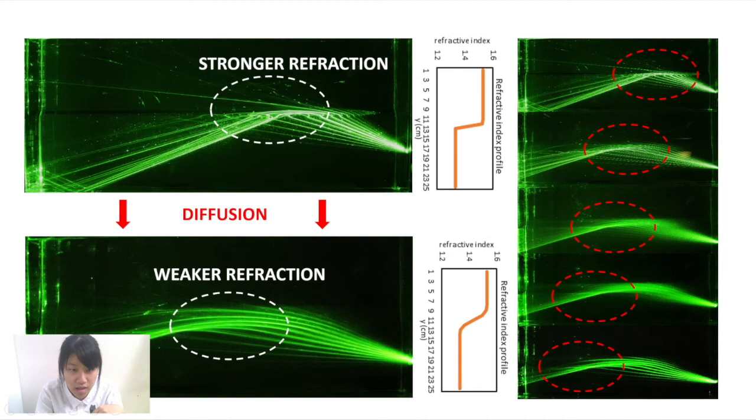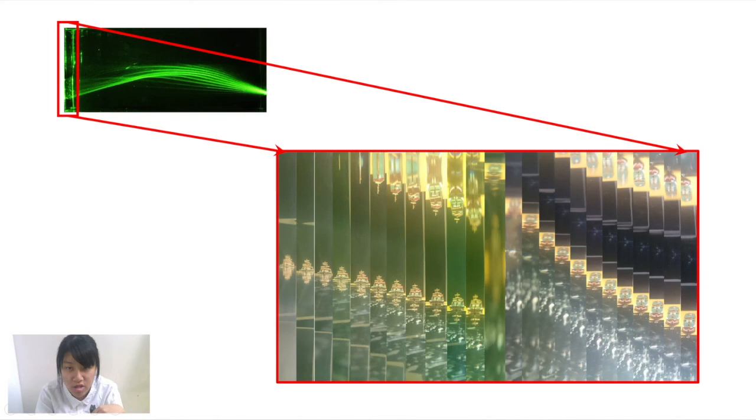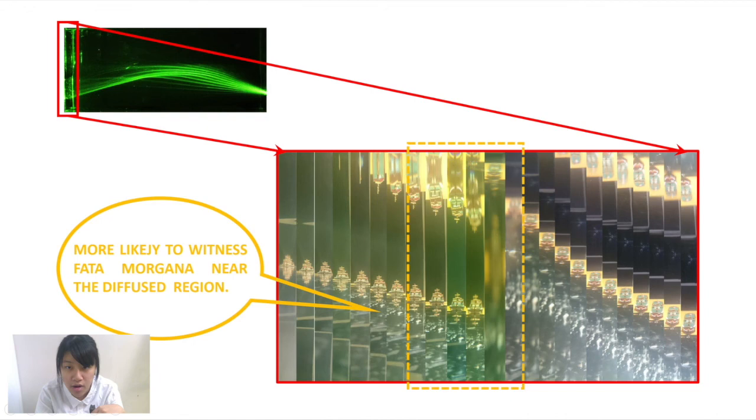Therefore, the more intense the refractive index varies, the shorter the distance will be for an observer to see Fata Morgana. Since we know that the mirage can be observed at spots where light clusters, the observational height is obviously important. We found that most light clusters near the diffused area. Therefore, it will be more possible to witness Fata Morgana near the region with large refractive index variation.